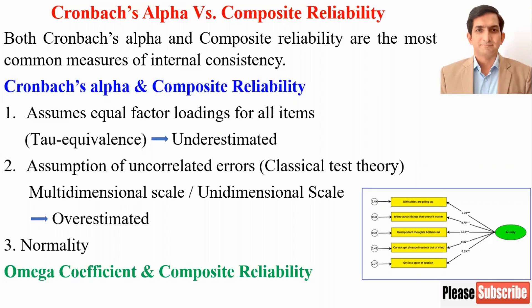First, Cronbach alpha assumes equal factor loading for all items. This is the assumption of tau equivalence. If this assumption is violated, then true reliability would be underestimated.